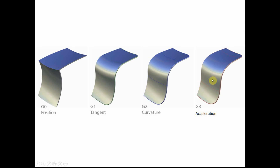And then finally, the last one is G3. Sometimes you will hear G3 also listed as curvature, but I call it acceleration continuity — much, much better reflections. You won't even get this inside of the GSD workbench of CATIA.